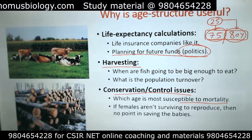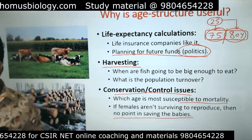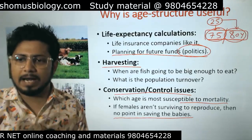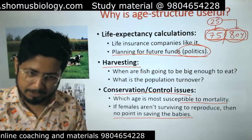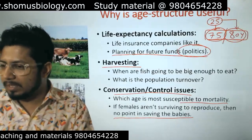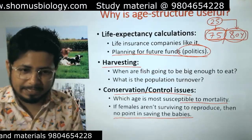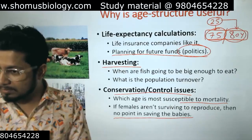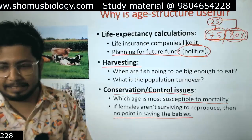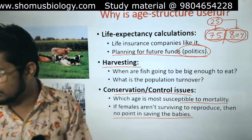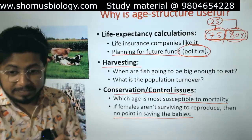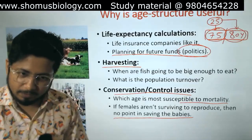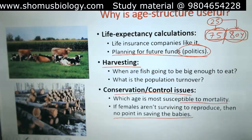If females aren't surviving long enough to reproduce, there's no point saving the babies. In conservation, captive breeding is a price-intensive process — it requires a lot of effort, time, money, and management. So if we find out that females after a certain age X are no longer viable for reproduction, and we have plenty of babies beyond that age who cannot reproduce, our conservation effort will fail. So we can judge by the life table at what time we can effectively conserve that organism, and whether it's logical to save it for conservation purposes at all. All this information can be drawn from the life table.